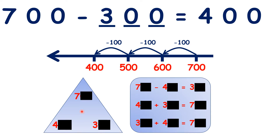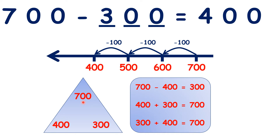We can see how these facts relate to the number facts we already know. All that is different is that rather than 7, 4, and 3, we have 700, 400, and 300.